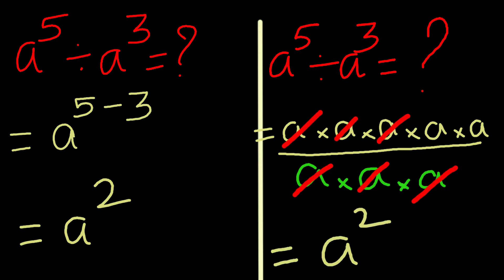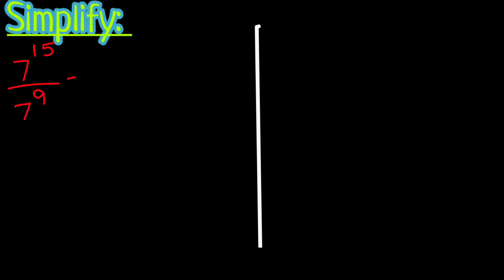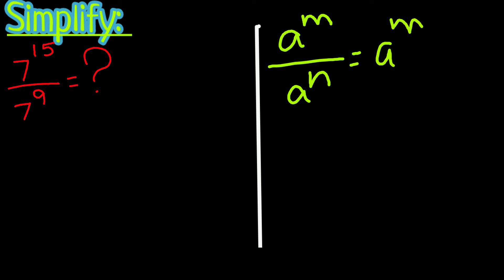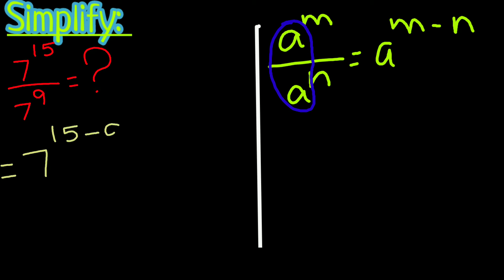Next, let's simplify 7 to the power 15 divided by 7 to the power 9. When dividing with a common base, we need to subtract the powers. We have 7 to the power 15 minus 9, which gives us 7 to the power 6.